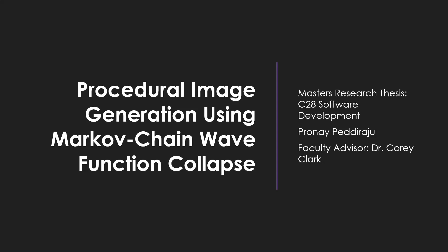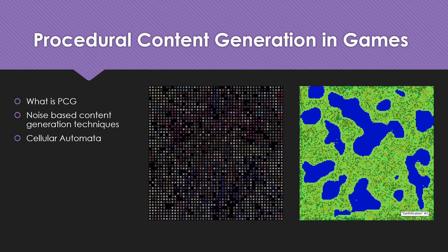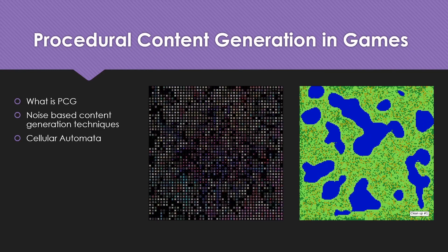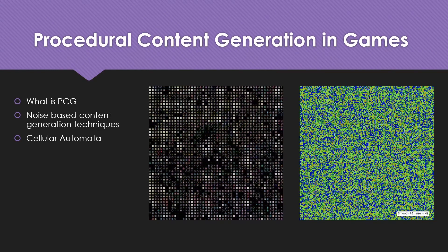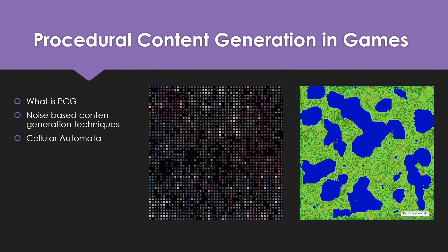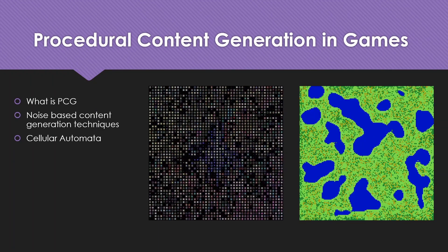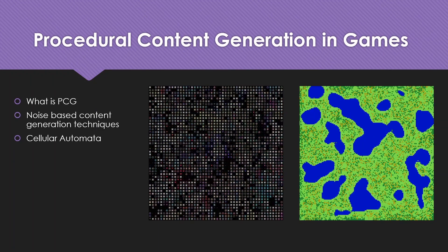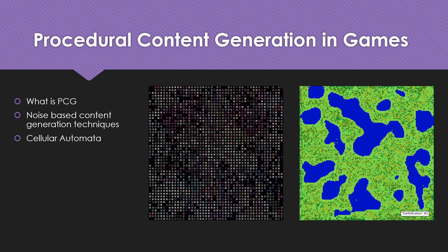Welcome to my thesis presentation on Procedural Image Generation using Markov Chain Wavefunction Collapse. Procedural content generation is a method of using assets and logic to generate different gameplay experiences. By using some cellular automata functions, games use mathematical noise and random numbers to create content such as maps and levels.